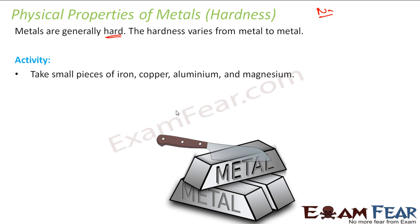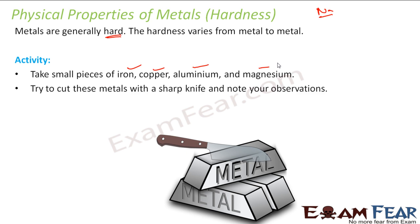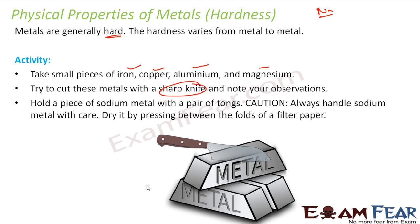For an activity, you can take iron, copper, aluminum, and magnesium and try to cut these with a sharp knife. You will observe that you will not be able to cut these, and that's why we can say that metals are hard. Now, if you take sodium — sodium is also a metal, but we have to be cautious because sodium is very reactive. The moment you take it out, it will burn. You have to hold it with a pair of tongs and try to cut it, and you will see that you are able to cut sodium. But it doesn't mean it is not a metal — the definition of metal is anything that loses an electron, and sodium very well loses an electron, so sodium is a metal. But this physical property doesn't match.